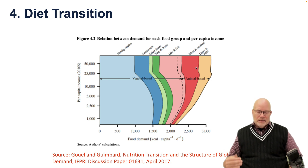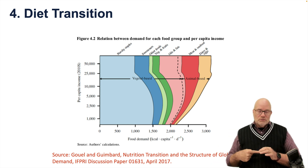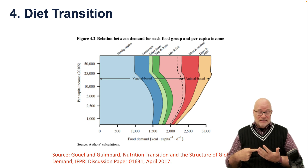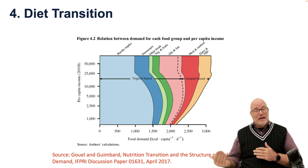There are two major points here. First, as we increase income from low levels, our calorie demands increase. Second, more and more of those calories come from animal-based sources.